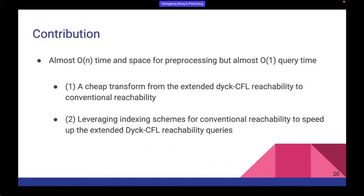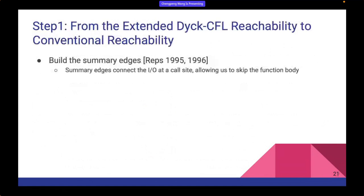In this paper, we try to answer this question by proposing a new approach for the extended Dyck-CFL reachability problem. Our approach consists of two steps. In the first step, we propose a graph transformation from the extended Dyck-CFL reachability problem to a conventional reachability problem. After such transformation, we leverage reachability indexing schemes from the database community to speed up conventional reachability queries, so that we can also answer extended Dyck-CFL reachability queries efficiently.